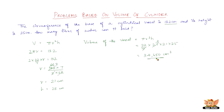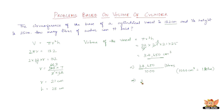The volume of the vessel is 34,650 cm³. The problem is not done yet because they are asking how many liters of water can it hold. To convert cm³ into liters, we need to know that 1000 cm³ equals 1 liter. Therefore, 34,650 cm³ divided by 1,000 is nothing but 34.65 liters.